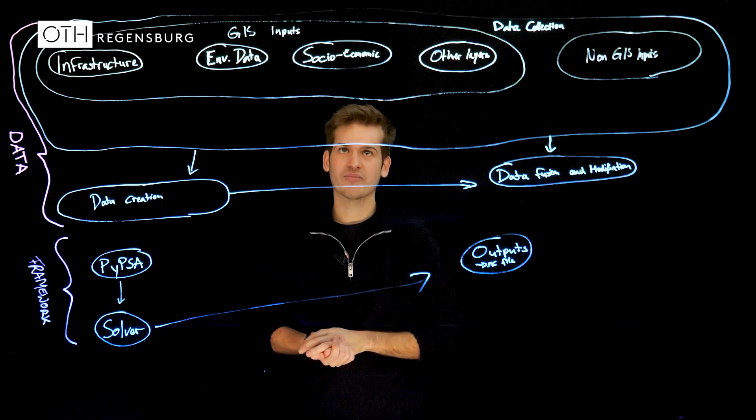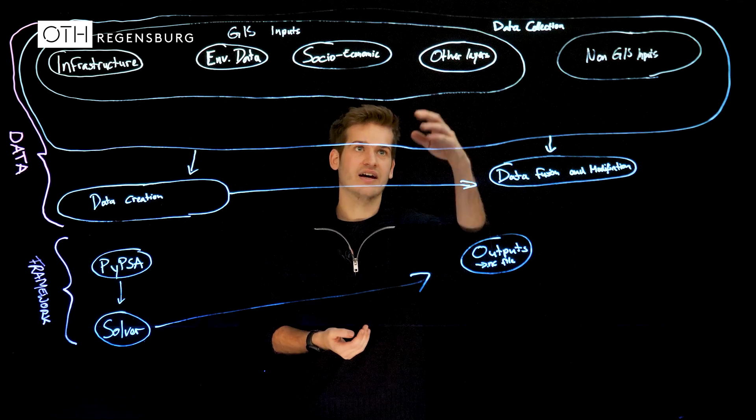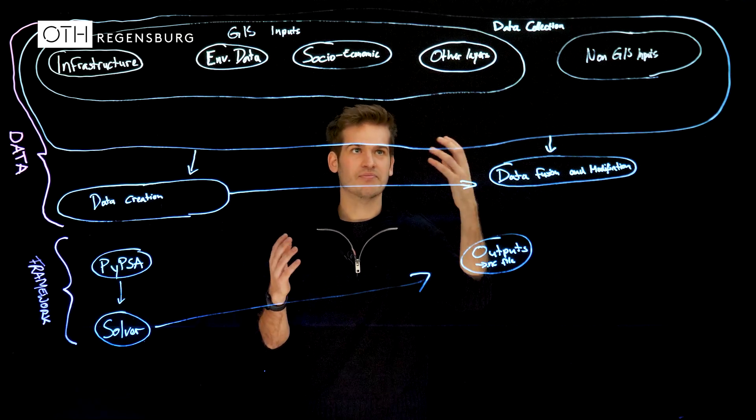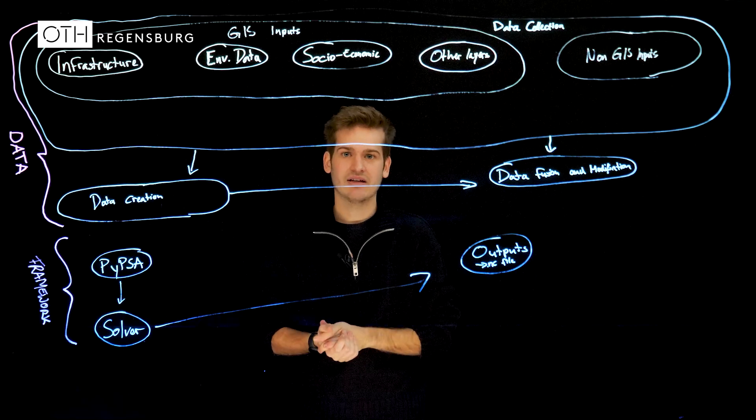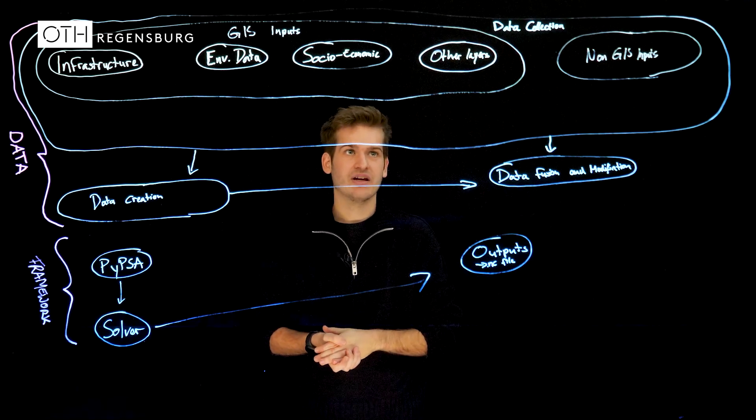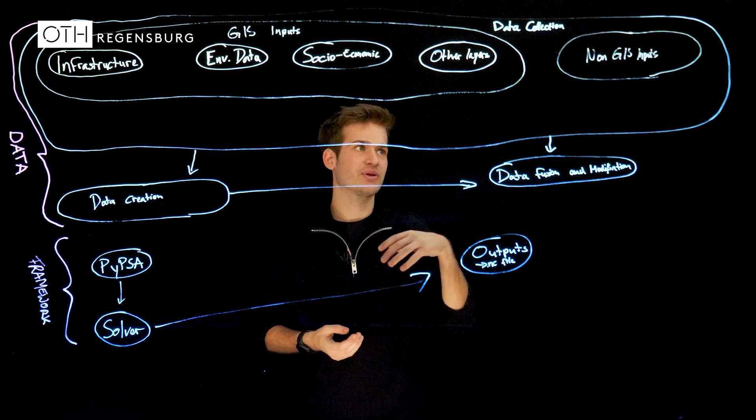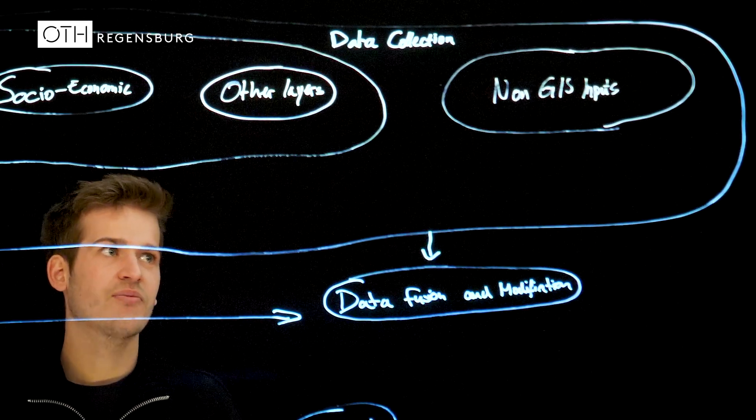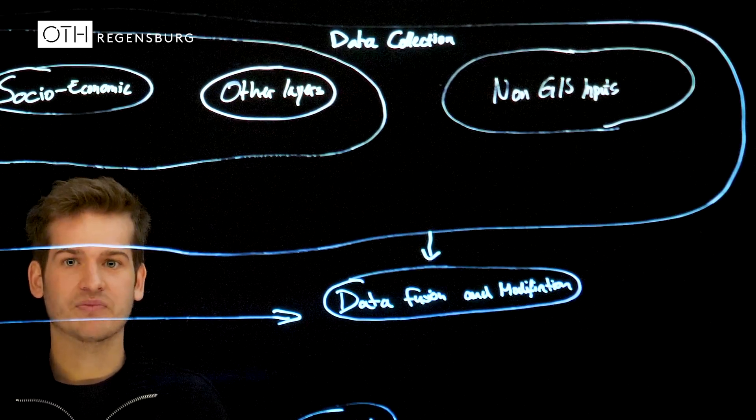We also have socio-economic data like GDP and other data like for example night traffic lights. In addition to all the GIS input data we also have non-geoinformation system input data from the user like configurations.